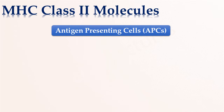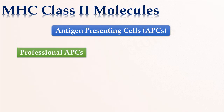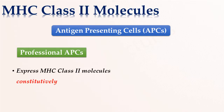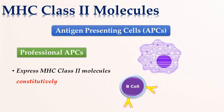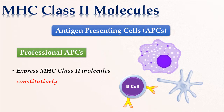There are two categories of antigen-presenting cells. The first category is known as professional antigen-presenting cells. Professional APCs constitutively express MHC class 2 molecules and thus regularly present antigens. These include B cells, macrophages, and dendritic cells.